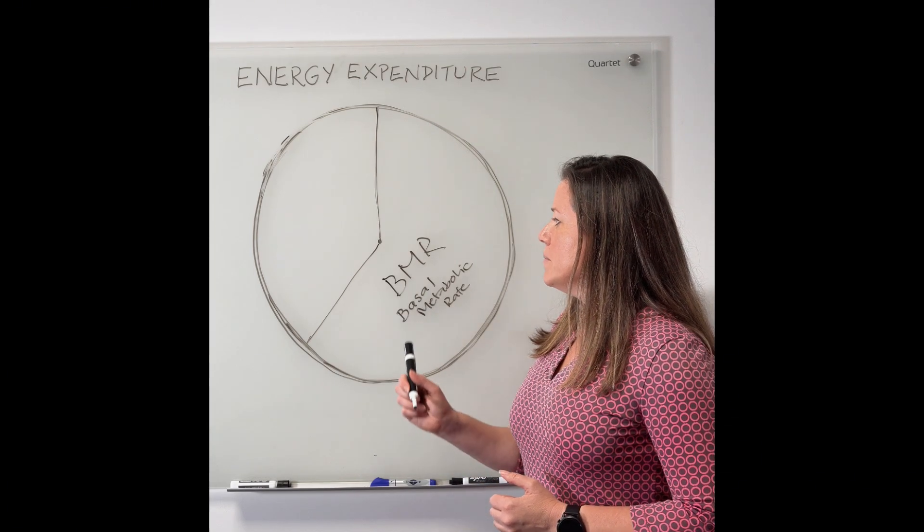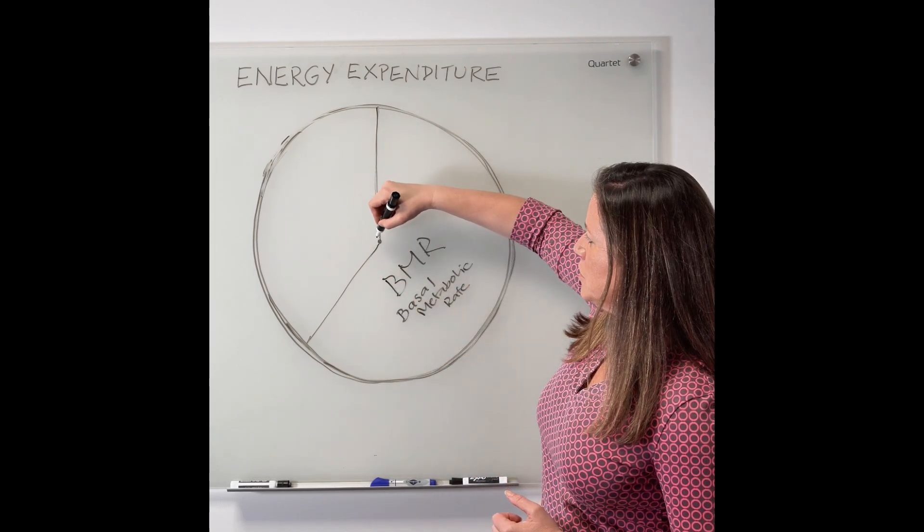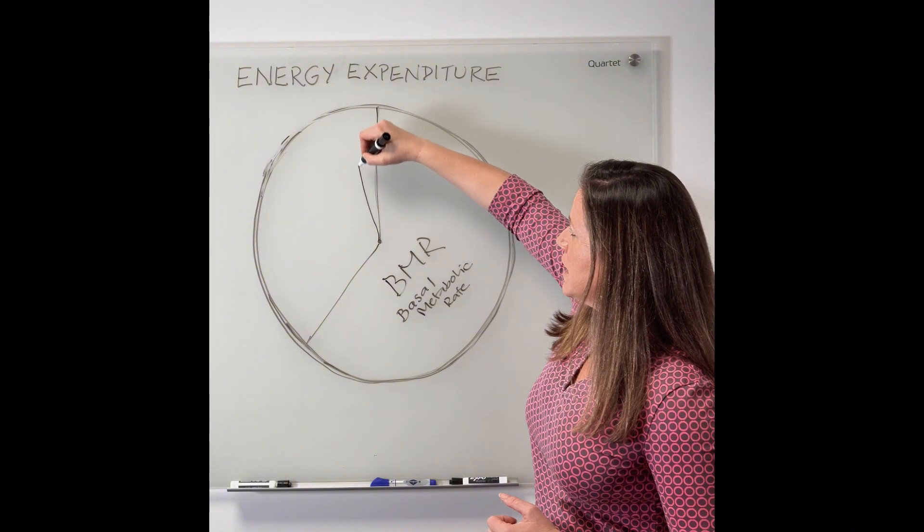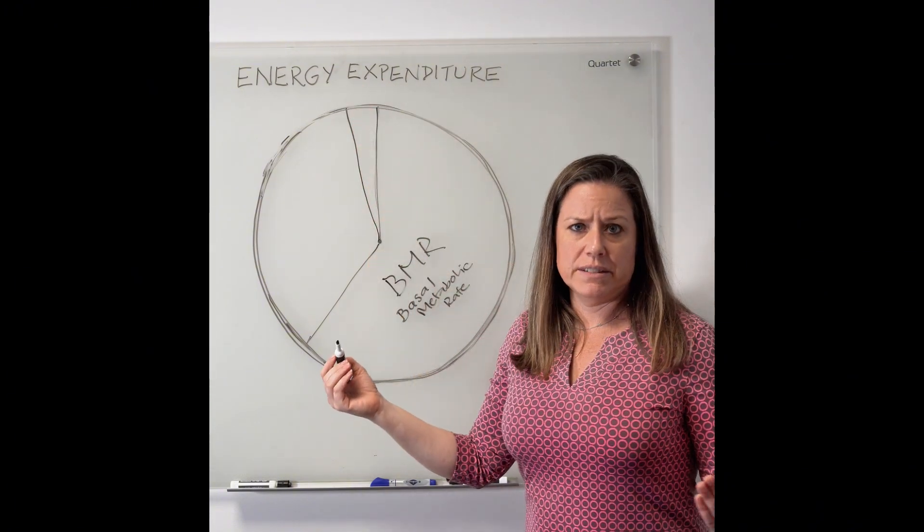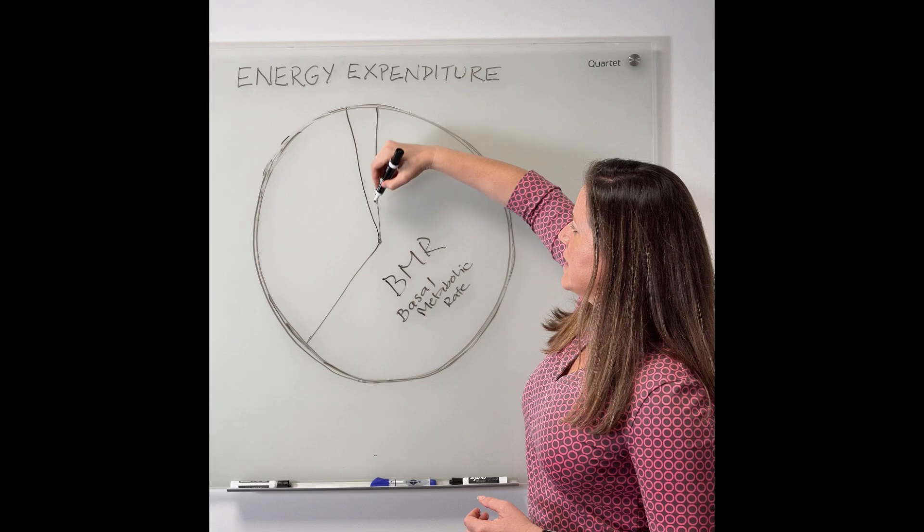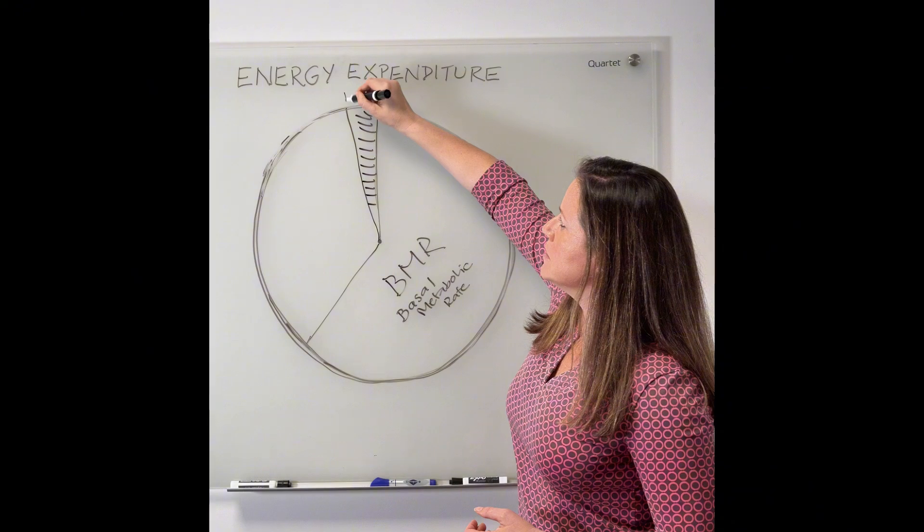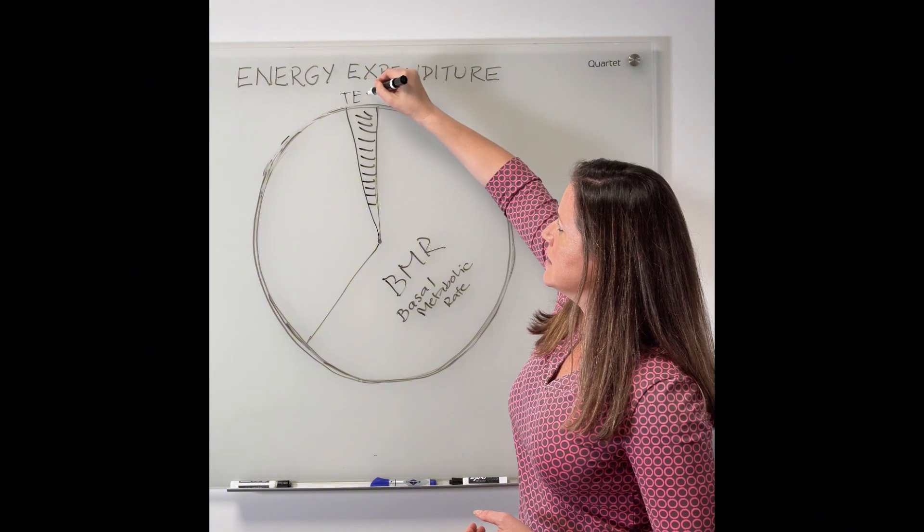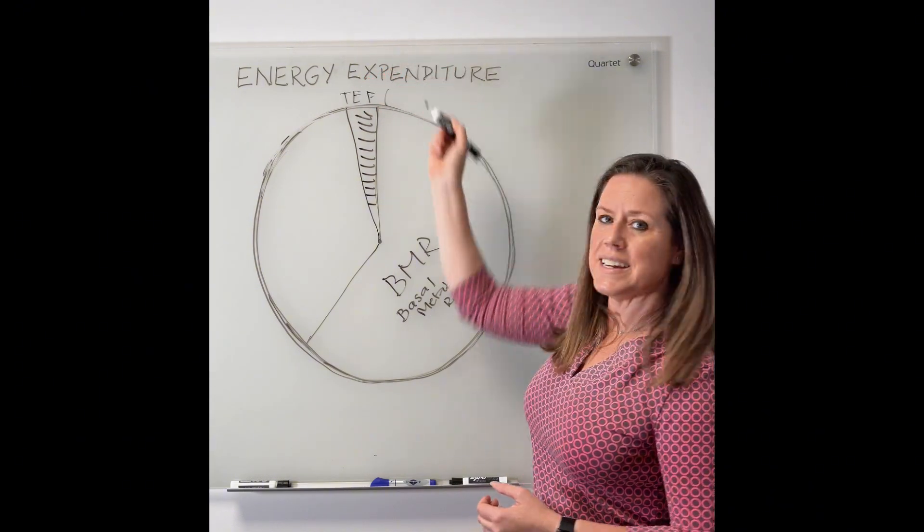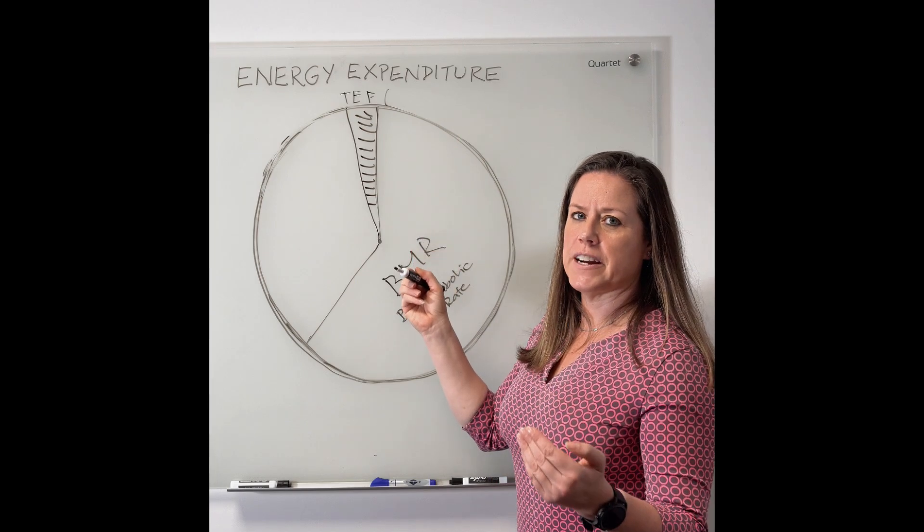Okay, so from BMR, we're going to draw a line to say, let's call it 11 o'clock. And this we're going to label TEF, which stands for the thermic effect of food.